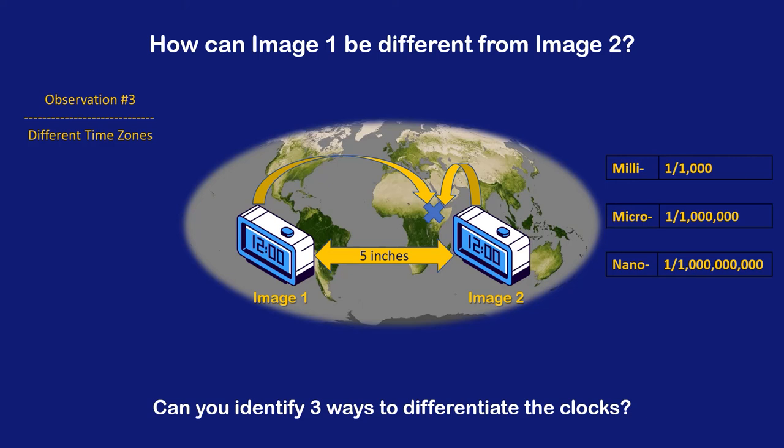But how would you count the difference in time between two nano time zones? You could use nanoseconds, picoseconds, or even seconds. It depends on how you want to position the decimal point. Or, create another system of time based on base 240 or base 120.